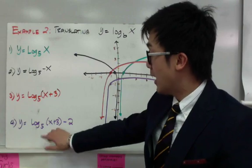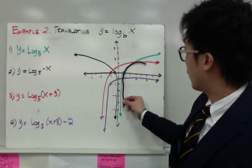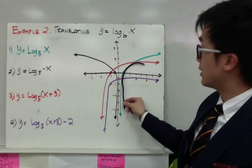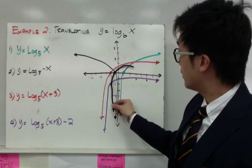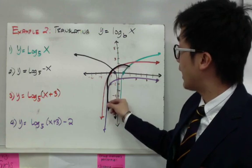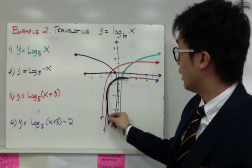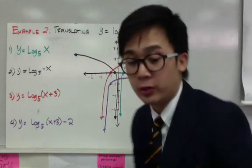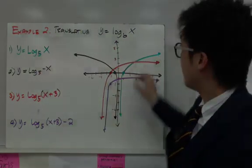For my last example, I have logarithm of x plus 3 minus 2 base 5. Going back to my standard logarithmic graph, to translate logarithm of x plus 3 minus 2 on the x-y plane, I move three units to the left: 1, 2, 3. The negative 2, or minus 2, means I also need to translate the entire graph two units downward: 1, 2. So this is the graph of logarithm of x plus 3 minus 2 base 5, and that's how your logarithm behaves based on these translations.